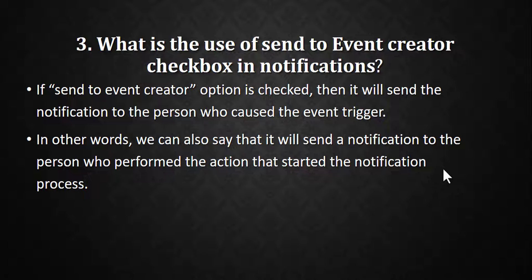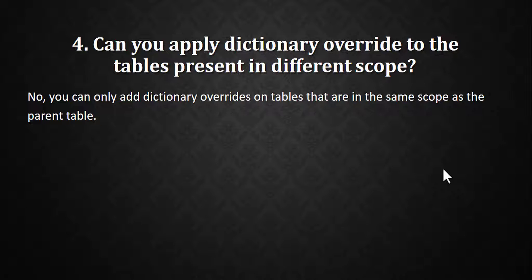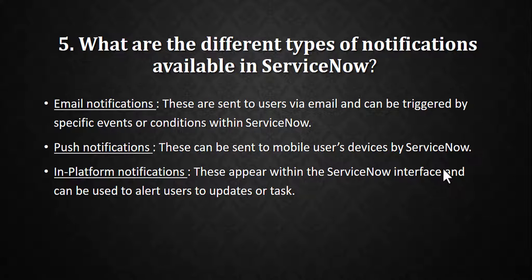The next question is: can we apply dictionary overrides to tables present in different scopes? The answer is no — we cannot apply dictionary overrides on tables that are in a different scope. Both the parent and child tables must be present in the same scope for dictionary overrides to be applied.